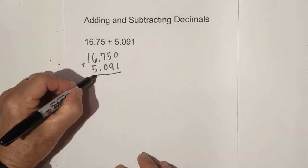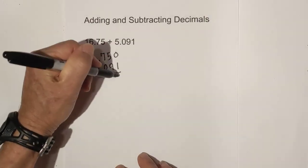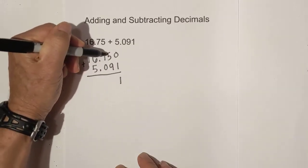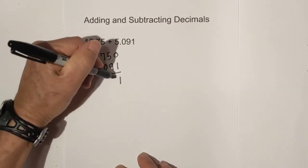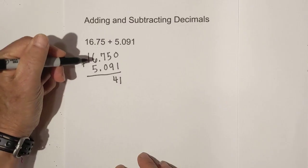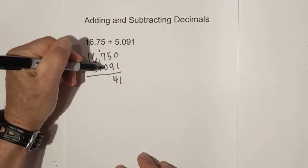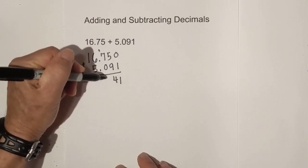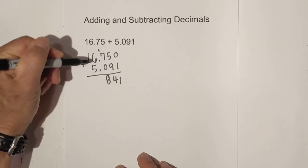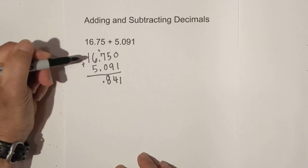Now all we do is add. Zero plus one is one. Five plus nine is fourteen. Let's carry the one over. Seven plus zero is seven, and you add the one, so now we have eight. Bring down the decimal.